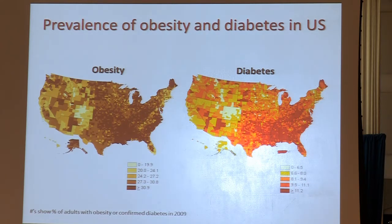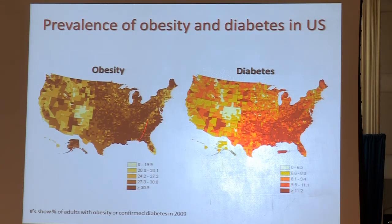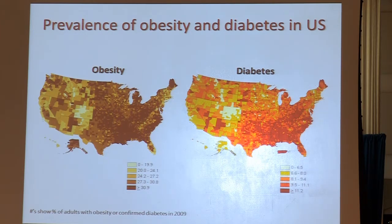We see this in the news all the time — local governments are outlawing super big gulps in an attempt to control this epidemic. We think this is largely environmental: inactivity and diet. Whereas diabetes itself is genetic. Clearly there's a relationship between obesity and diabetes, and we believe that the environmental factors contributing to obesity unmask the genetic susceptibility that confers diabetes.